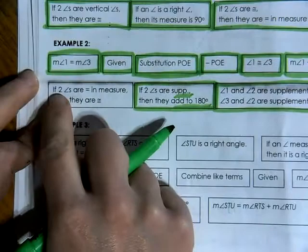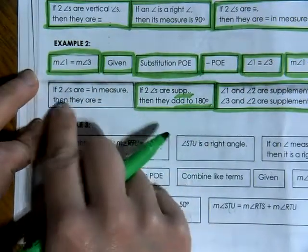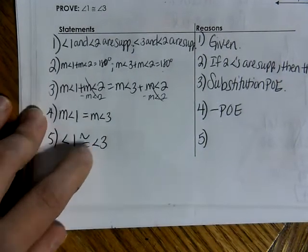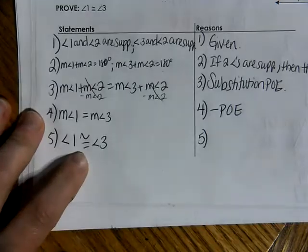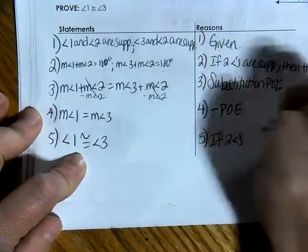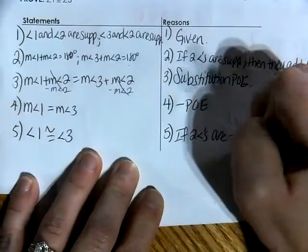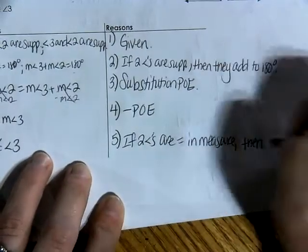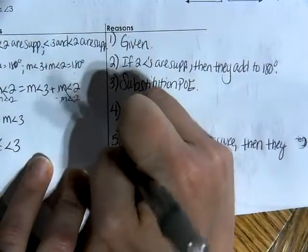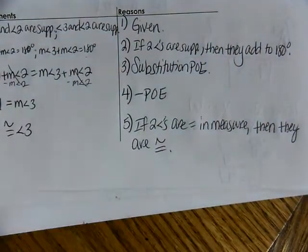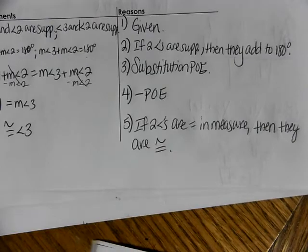The only statement that's left is: if two angles are equal in measure, then they are congruent. What came before was equal in measure, and then I have congruent. So I'm going to write that if two angles are equal in measure, then they are congruent. They would be congruent to each other, and that is the last statement. And we are done with our proof.